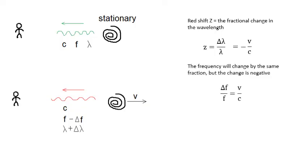The frequency will change by the same fraction because you've got c equals fλ, and c is constant. So if λ changes by a certain fraction, then f will change by the same fraction, but it will be a negative change. If the change in λ is a positive fraction, then with f it will be a negative fraction. Basically, λ gets bigger, f gets smaller by the same fraction.